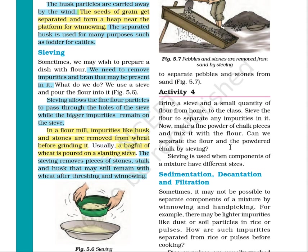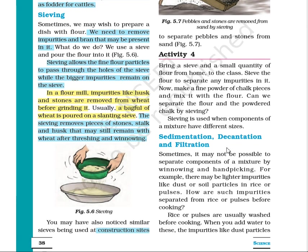Another method is sieving. A sieve is a plate with many holes, and the hole size depends on the size of the impurity to be separated. Sieving allows fine flour particles to pass through the holes while larger impurities remain on the sieve, helping us separate very fine particles from larger ones.